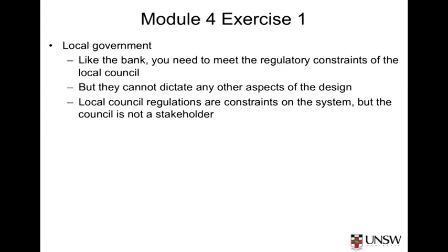Similarly, Local Government regulations place significant constraints on the house design, its location on the block, its access to utilities, and the relationship you need to have with your neighbours. But that ability to impose regulatory constraints makes them a major source of constraints — it doesn't make them a stakeholder. For example, they can't tell you what colour the kitchen is. Their principal impact will be as a source of constraints in terms of where the building can be built and how you interface with your environment.